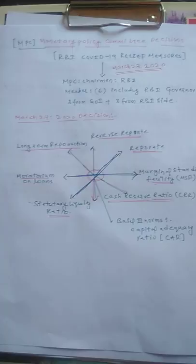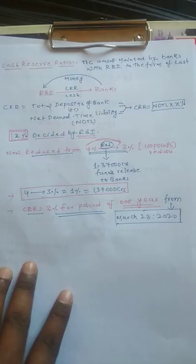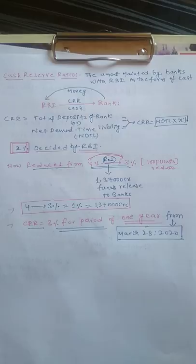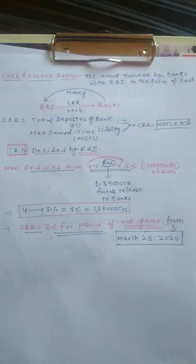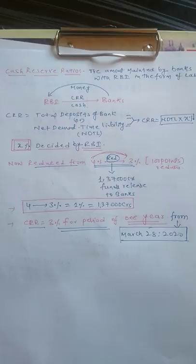I will try to explain these topics in short form. First, the Cash Reserve Ratio. What is meant by Cash Reserve Ratio? CRR means the amount of money maintained by banks with RBI in the form of cash. Banks hold whatever money deposited with RBI in the form of cash, which is known as Cash Reserve Ratio.